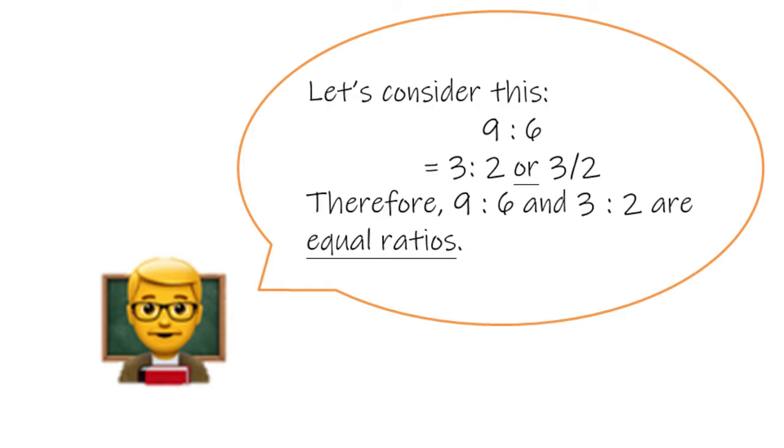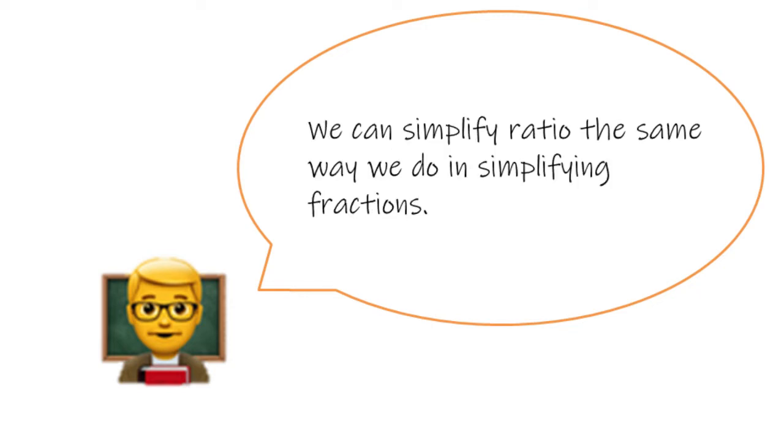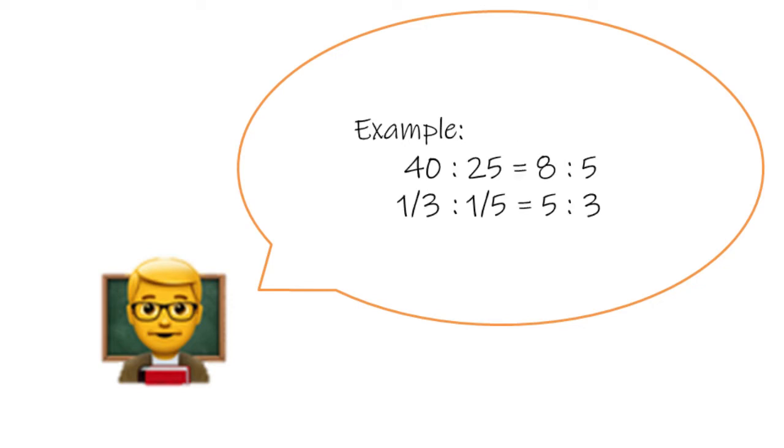Now consider the ratio 9 to 6. It can be expressed as 9 over 6, which when simplified equals to 3 over 2 or 3 to 2. Therefore, 9 to 6 and 3 to 2 are equal ratios. A ratio is like a fraction. It remains the same when each of the terms are multiplied or divided by a same non-zero number. We can simplify ratios like we do to fractions. 40 to 25 can be simplified to 8 to 5.